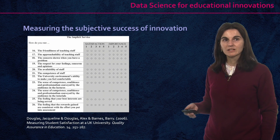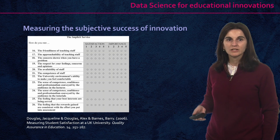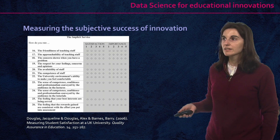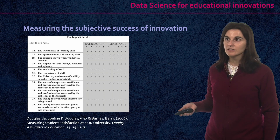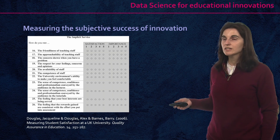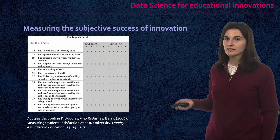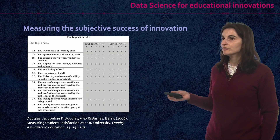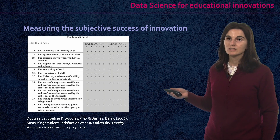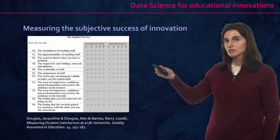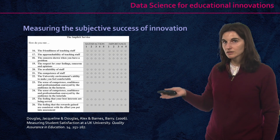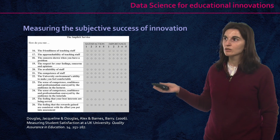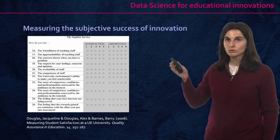Here we have an example of a subjective measurement scale for measuring satisfaction. This scale was analyzed by Jacqueline and Alex Douglas. Here we can see the writing of different items concerning a satisfaction measurement scale at a university in the United Kingdom. The scale ranges from one to five and contains two dimensions: we are analyzing satisfaction on one hand, and on the right side we are analyzing the importance assigned by the student to each of these items.